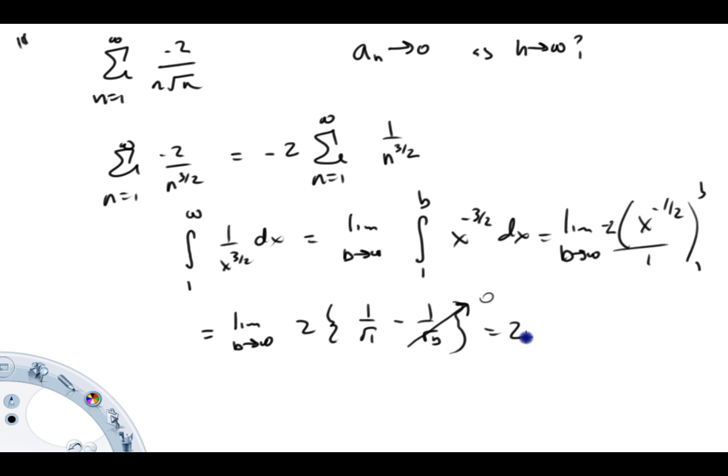So what we've shown here is that the integral converged to a value of 2 and our original summation meets the criteria for the integral test. So our summation will follow suit with the integral, so therefore the summation also converges.